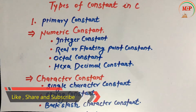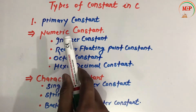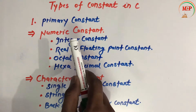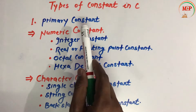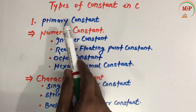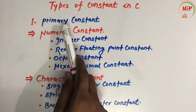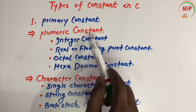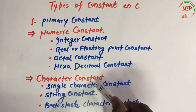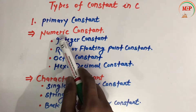Now let's see the types of constants in C language. There are two types: the first is primary constant and the second is secondary constant. Primary constant is further divided into two types: numeric constant and character constant.